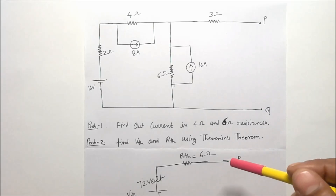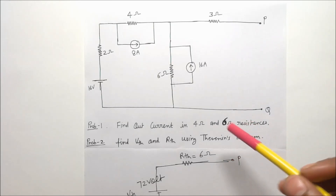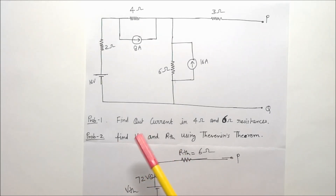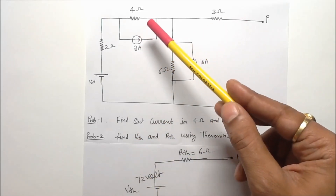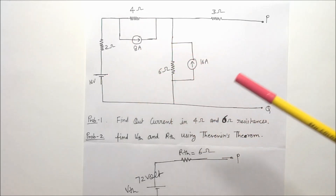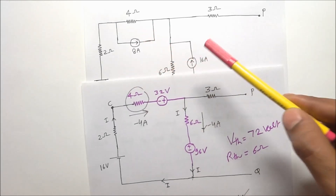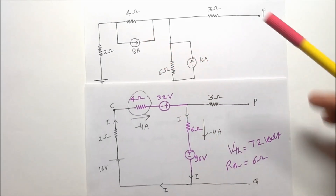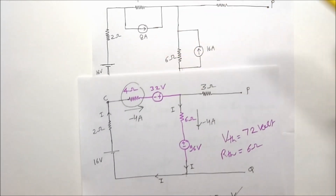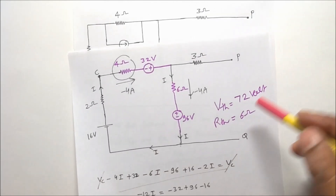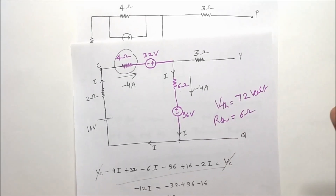Let me discuss another important point: the solution of problem number two will be correct if you try to solve it by converting the current source into a voltage source. If you convert both current sources into their equivalent voltage sources and try to find out Vth and Rth, you will get the same correct values — there will be no problem.